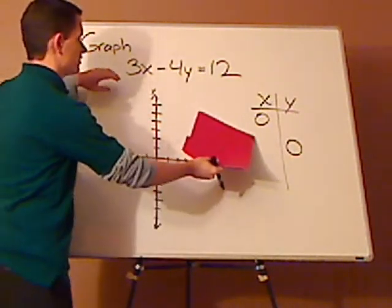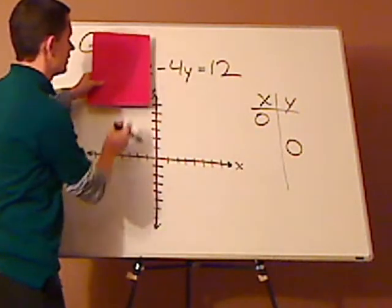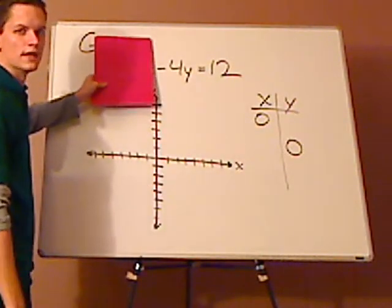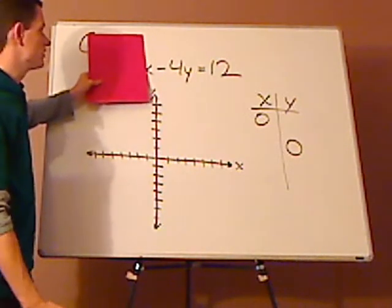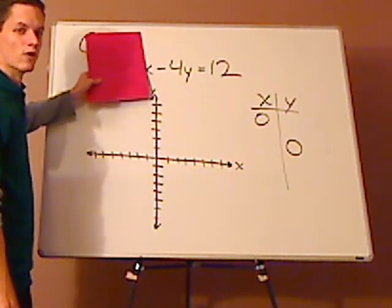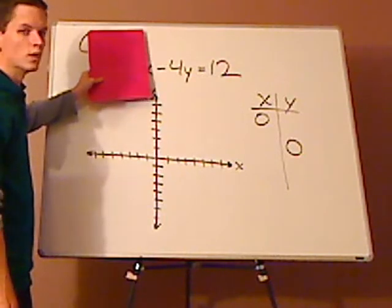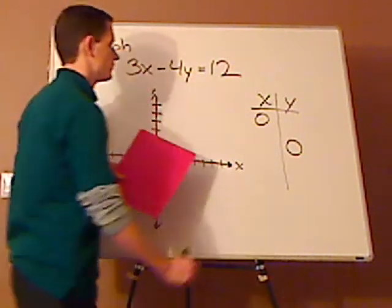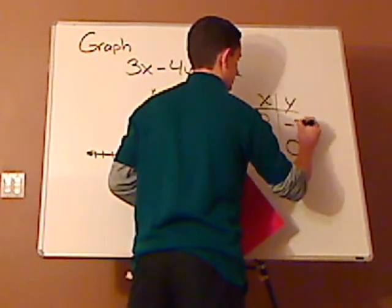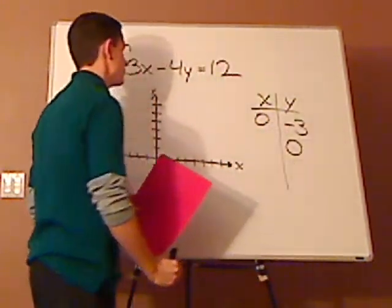So, for example, if I plug in zero for x, I get negative 4y equals 12. And you can do that in your head, right? You're going to divide both sides by negative 4. When you do that, what's that going to give you? Right, negative 3. So that would be the y intercept.